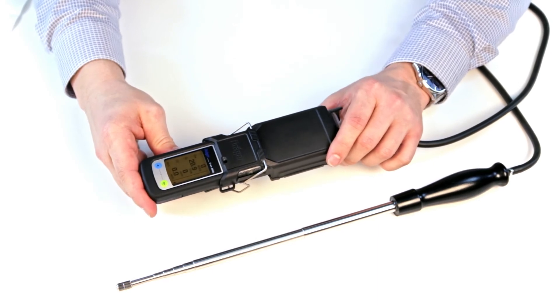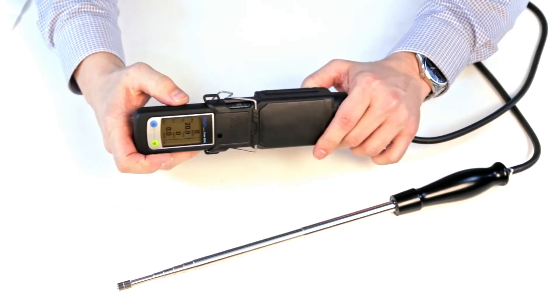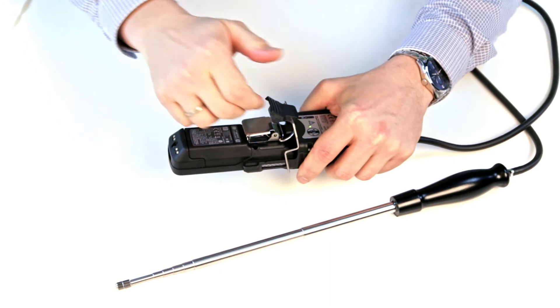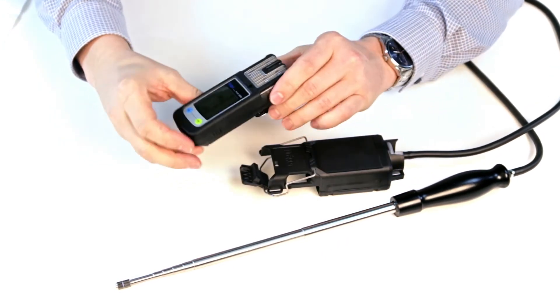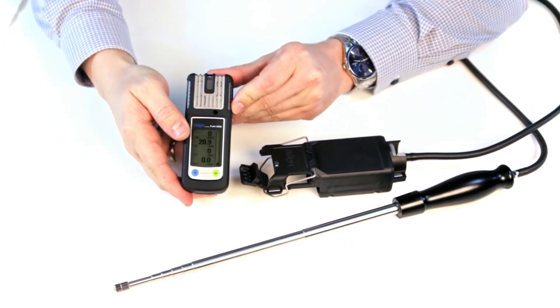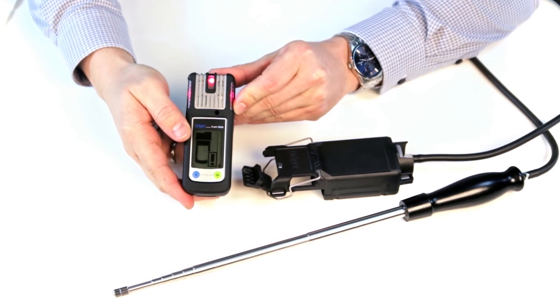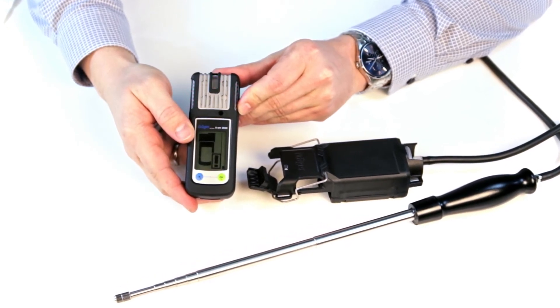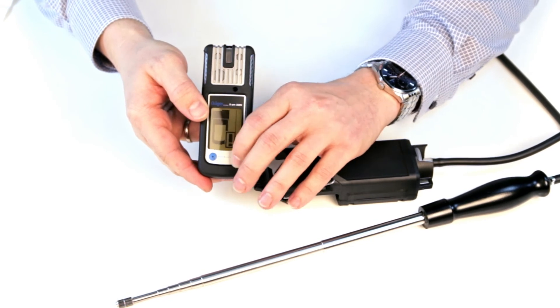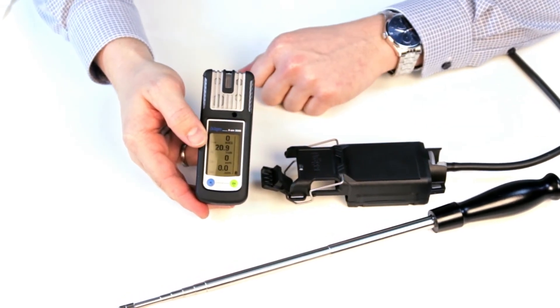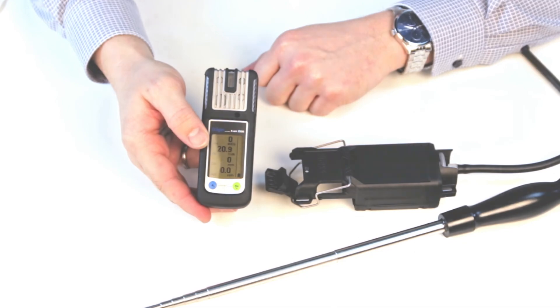The pump automatically turns off when it is removed from the XM. Open the quick fastening clamp and remove the XM. A warning is shown on the display. Confirm this warning with the green OK button. The pump will stop and you can now use the XM as a gas monitoring device again.